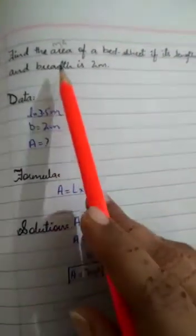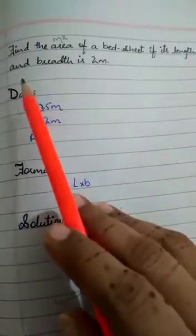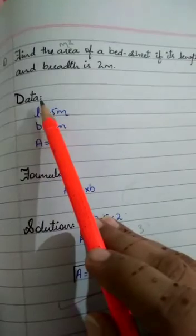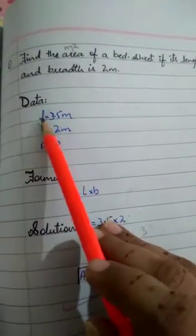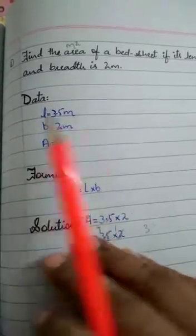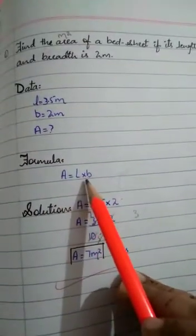Question number one. Find the area of a bed sheet if its length is 3.5 meter and breadth is 2 meter. First of all, you have to make data. Length given is, breadth given is, area is. Formula is A equals L times B.